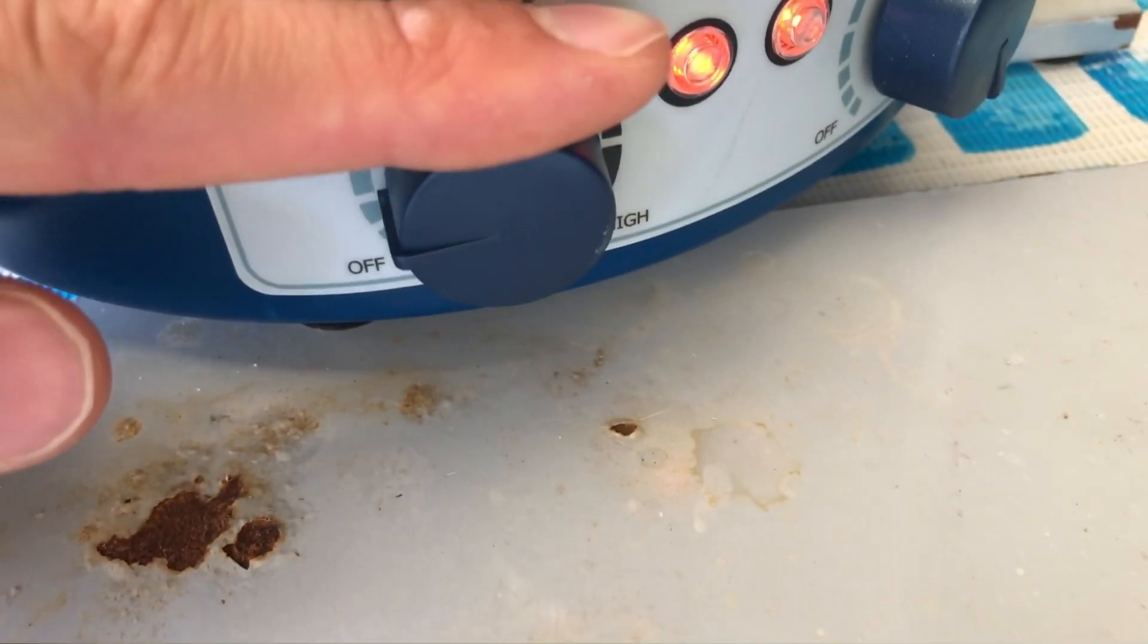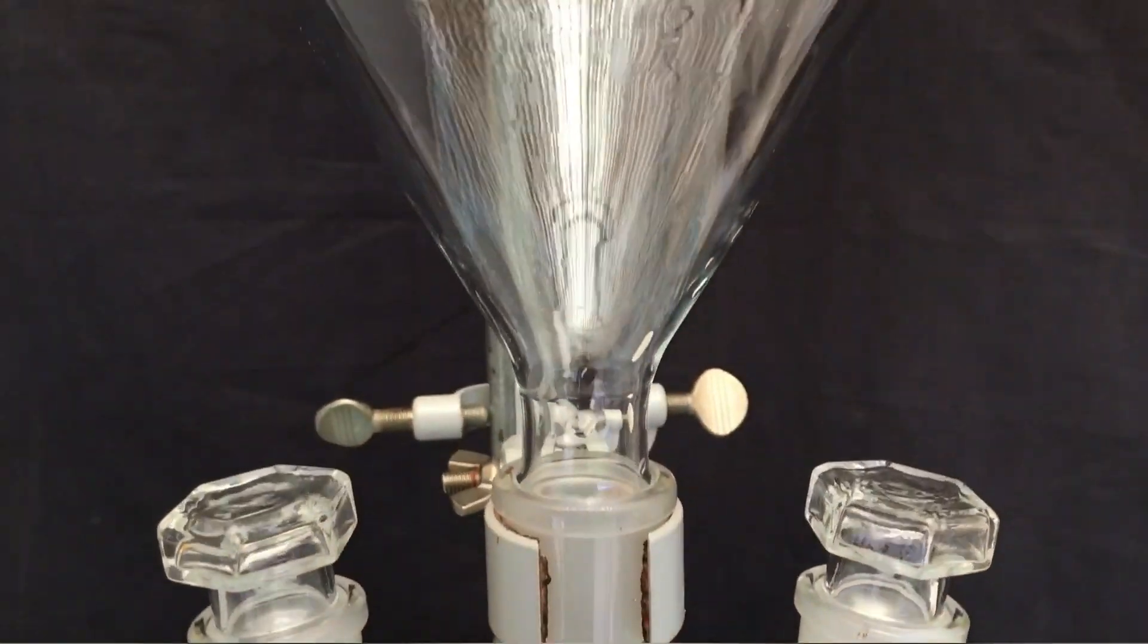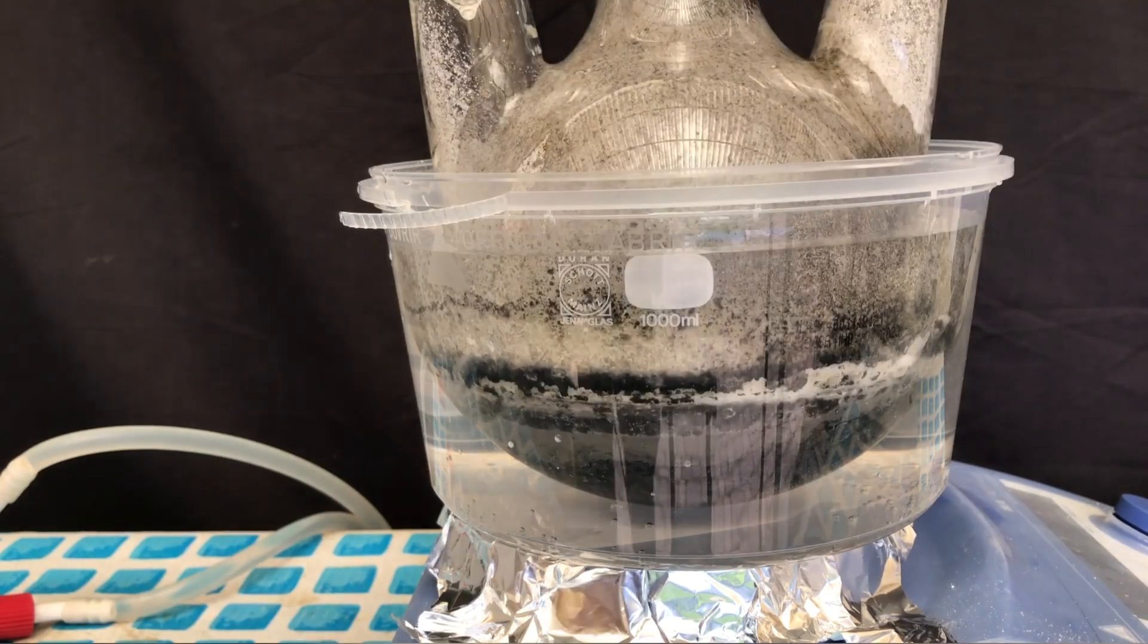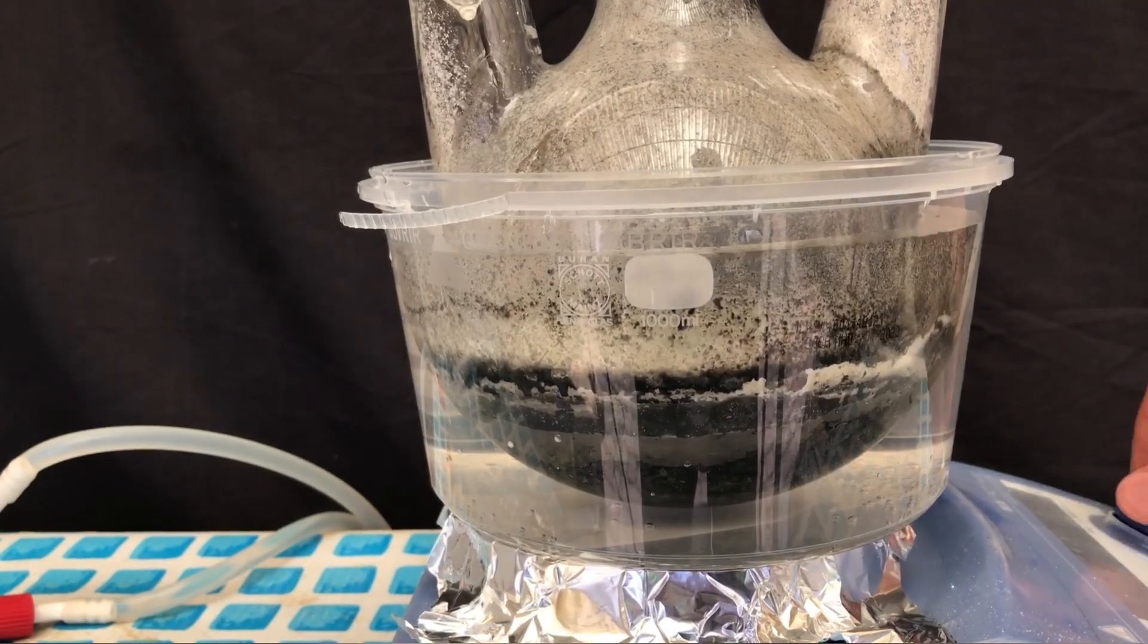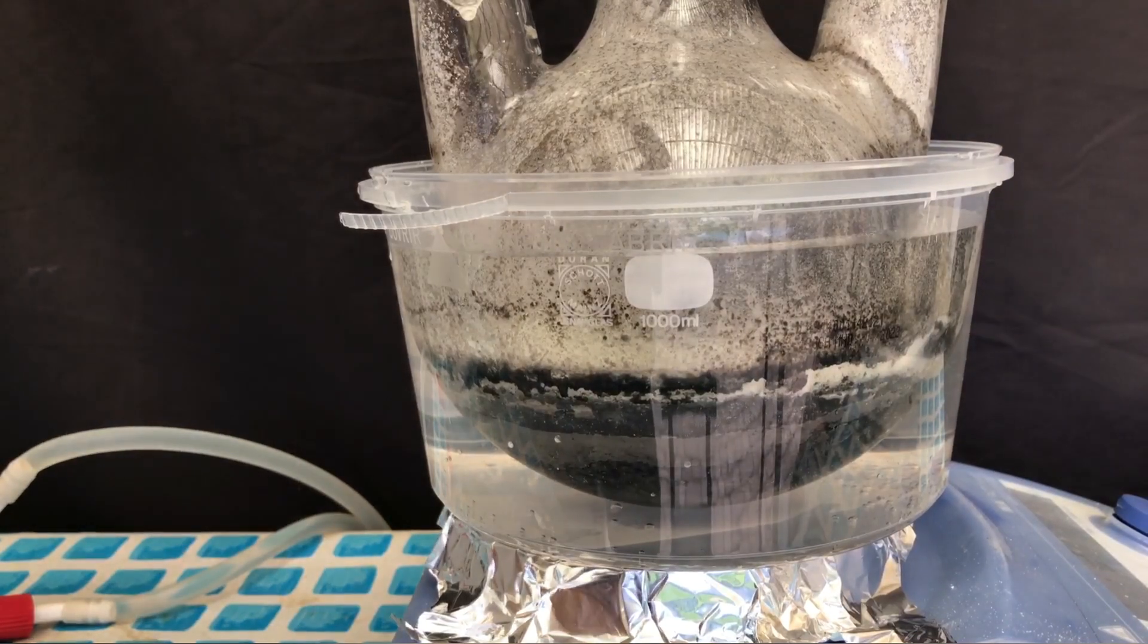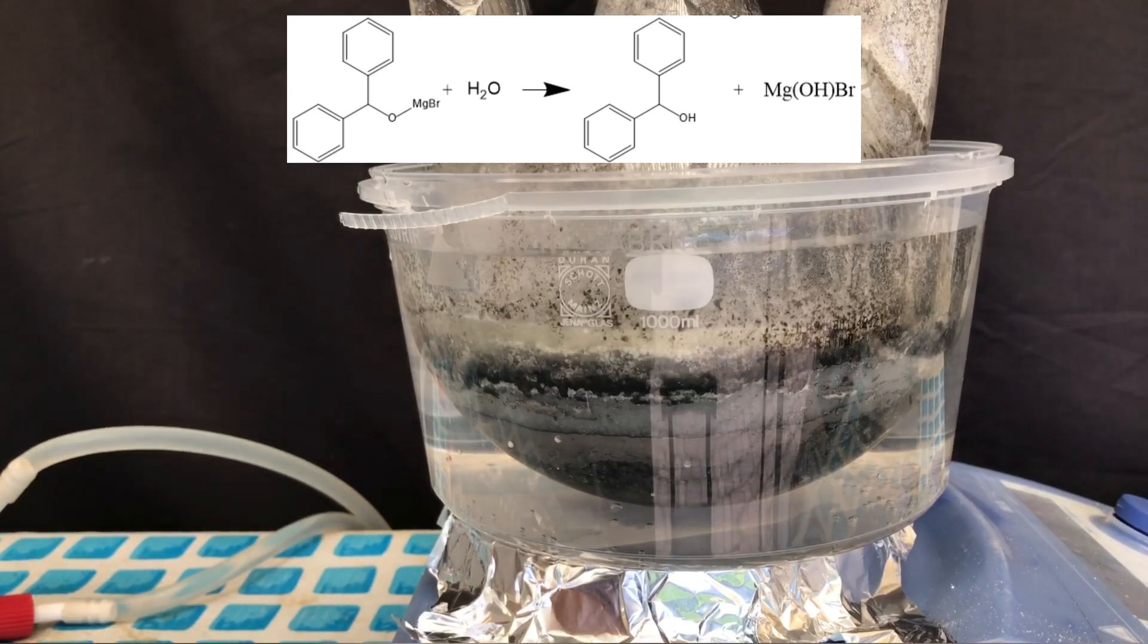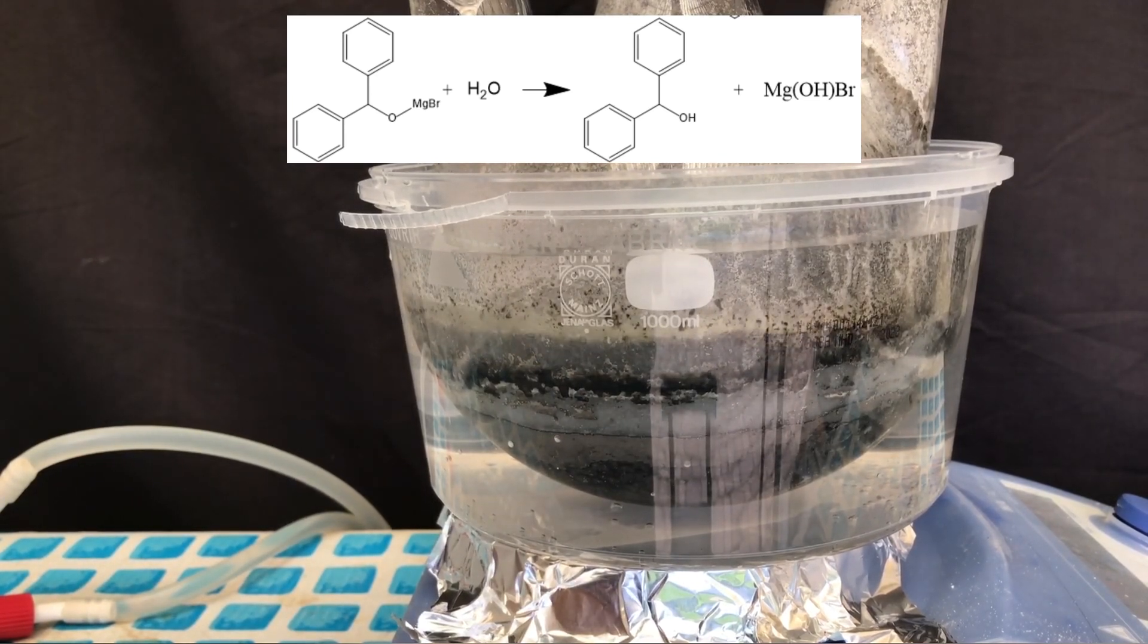Anyways, after half an hour of refluxing, the heating mantle was turned back off and we waited for everything to cool down. The apparatus was dismantled and this big ass funnel was attached. The round bottom flask was placed into a cold water bath and we slowly added a lot of crushed ice to ice-cold water. During this step, our desired benzhydrol and this other insoluble product are formed.